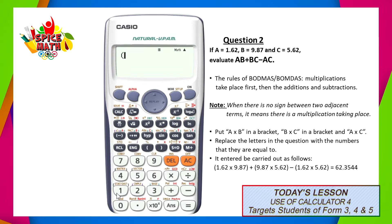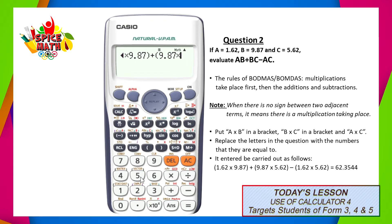First, we place an open bracket and put our value for A, 1.62, multiplied by our value for B, 9.87, and we then close the bracket. This piece of our entry would cover the value for AB, because it is the value of A multiplied by the value of B. The next part of the expression has an addition sign, so we place our addition sign. The next part is BC — to enter that, we place the value of B, which is 9.87, we put a multiplication sign, and then we enter the value for C, which is 5.62. This section would cover the BC part of the equation, because it is the value of B multiplied by the value of C.